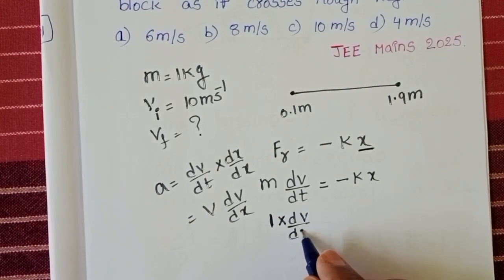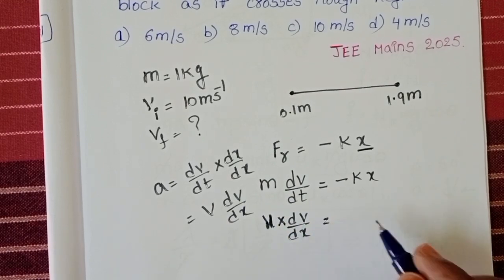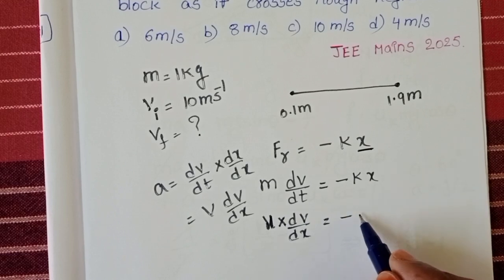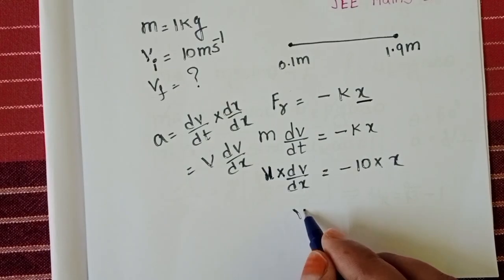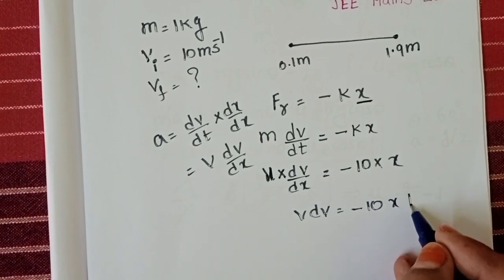Write this formula here. dv by dx into v. 1 into v is v. So v into dv by dx equals minus kx. k value is 10 newton per meter. So minus 10 into x. v dv equals minus 10 into x dx.